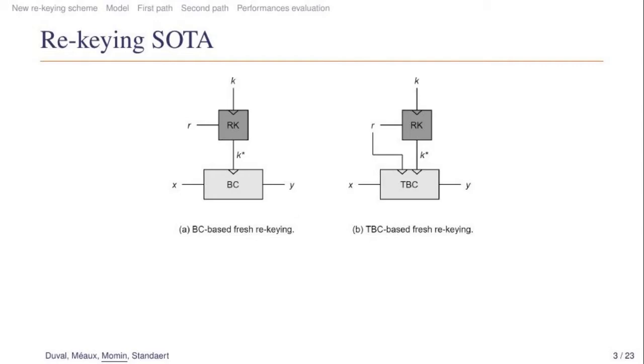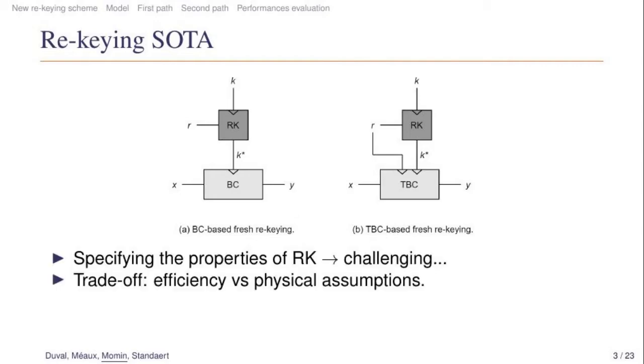Of course, this remains valid as long as the so-called rekeying function is secure against side channel attacks. Put in another way, rekeying leverages the separation of duty between an easy to protect rekeying function (the RK block in dark grey) and a cryptographically strong function such as the block cipher or tweakable block cipher (represented in light grey). However, apart from the fact that it should be easy to protect, specifying unified properties for the RK functions appears to be challenging. Currently published solutions adjust the trade-off between efficiency and the physical assumptions required to achieve a secure implementation in different ways.